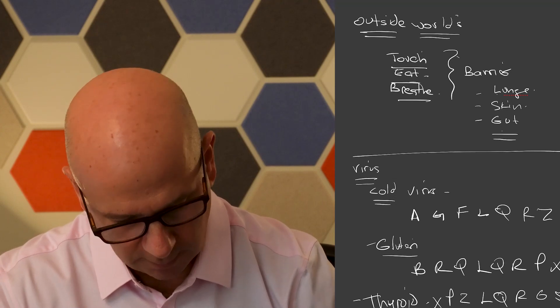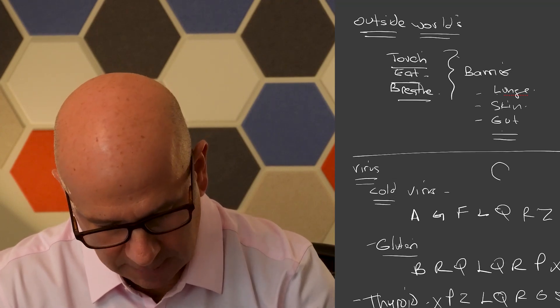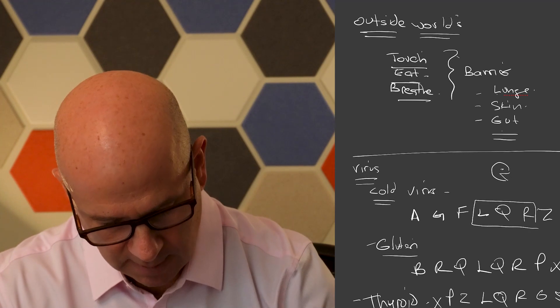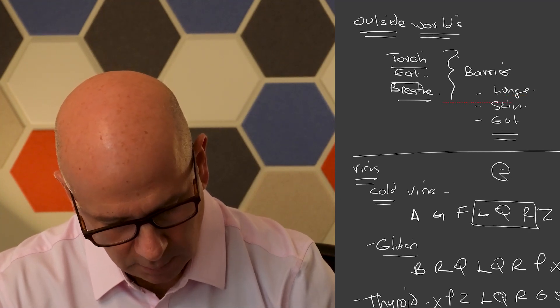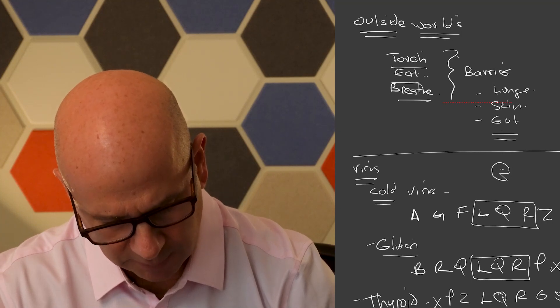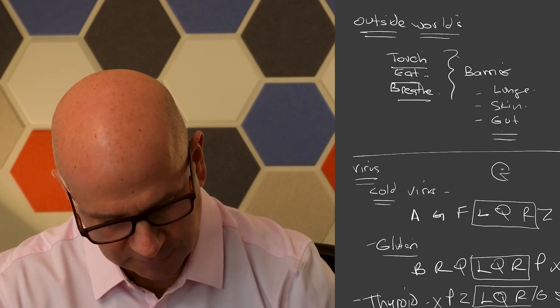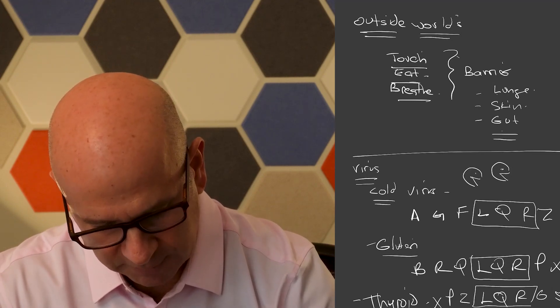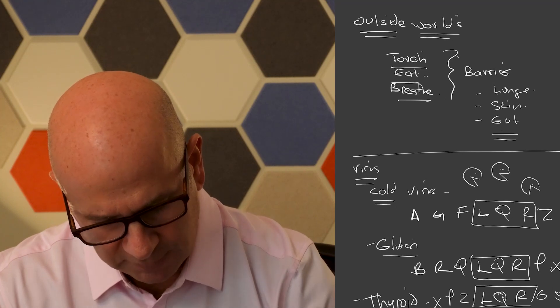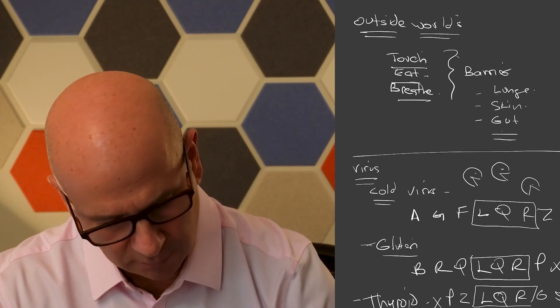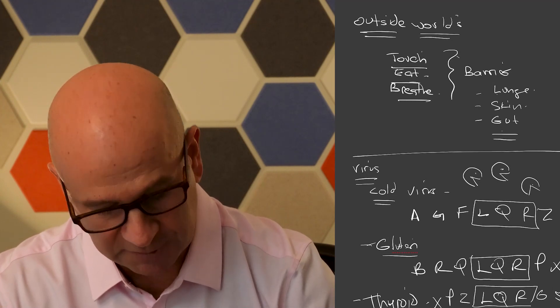Okay, one thing the immune system knows is that it needs to attack the cold virus. And if it identifies this section of the protein, every time it sees it, it will attack it. But look, gluten has a section that has a similar sequence. The thyroid protein has a section that has a similar sequence. So the immune system, over time, when it's repetitively insulted, will say, you know what, that food particle looks a lot like that cold virus. I really can't tell the difference. I'm just going to attack both.